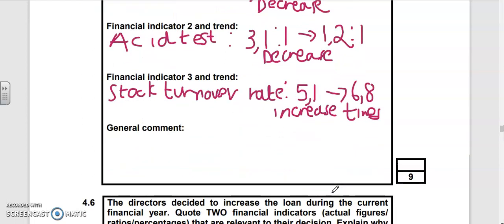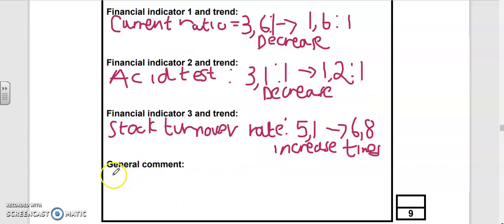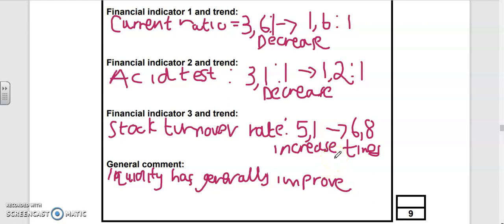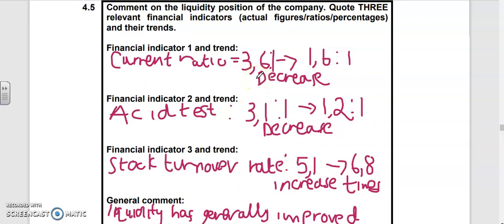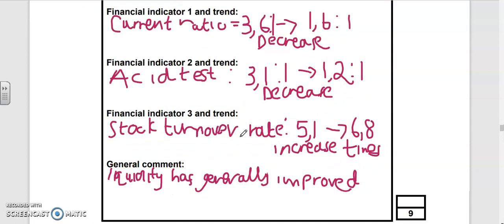For general comment, the liquidity has generally improved. I'll tell you why. 3.6 is very high - the norm for current ratio is usually 2 is to 1. The acid test 3.1 is also pretty high, so it decreased in 2014 which shows a more realistic value.